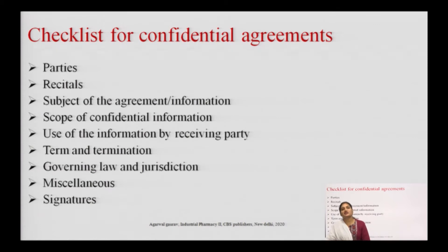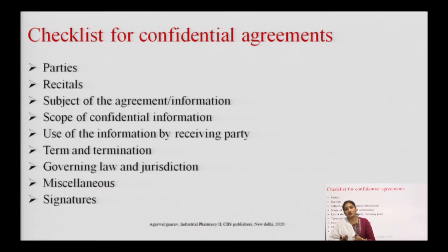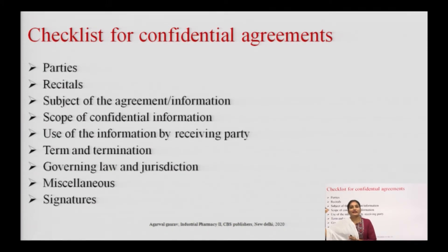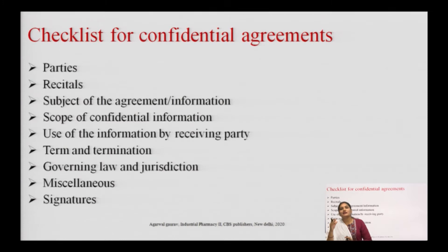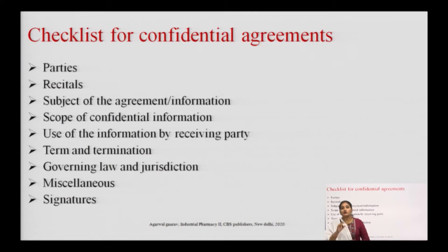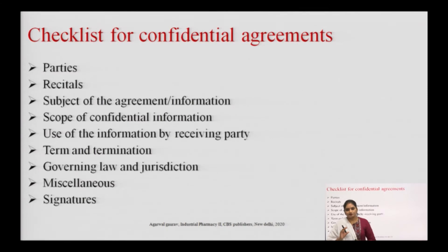Governing law and jurisdiction specifies which government law and jurisdiction this confidentiality agreement corresponds to — for example, a specific act or resolution. Miscellaneous covers any other information needed for the agreement. Finally, signature from both parties must be present in the confidentiality agreement to make it valid.